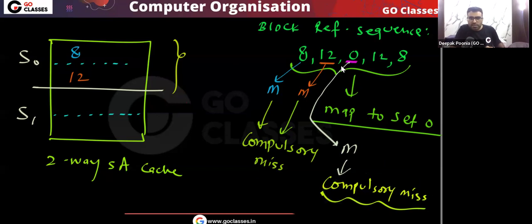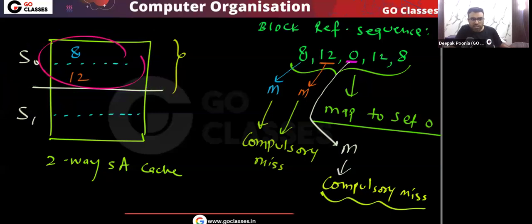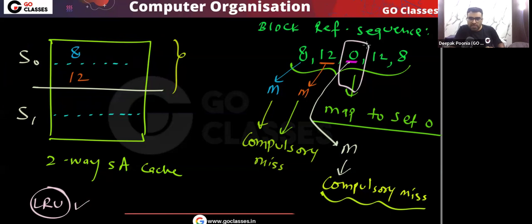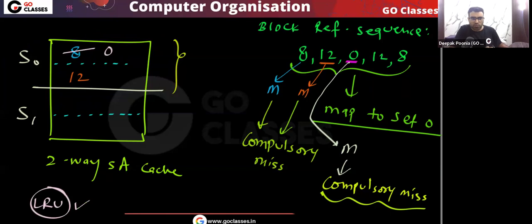When block 0 is accessed, it maps to set number zero. We need to replace one of the current blocks — 8 or 12. Using the LRU policy: block 12 was more recently used, so block 8 is least recently used. Therefore we replace block 8 with block 0.